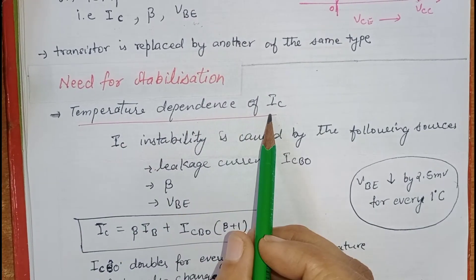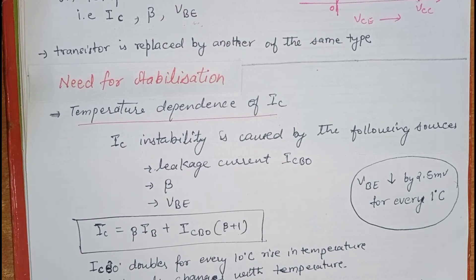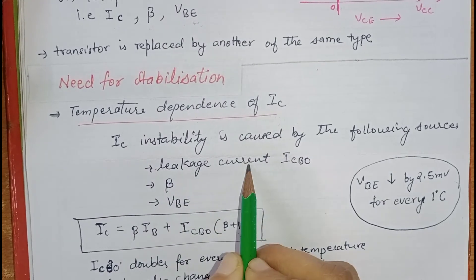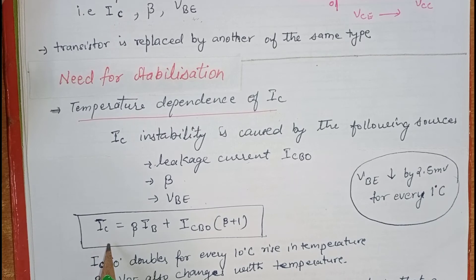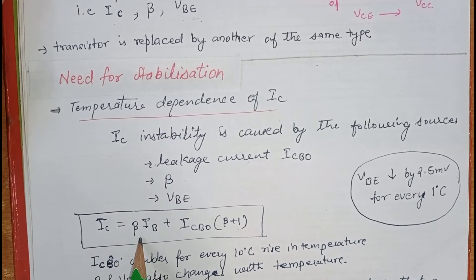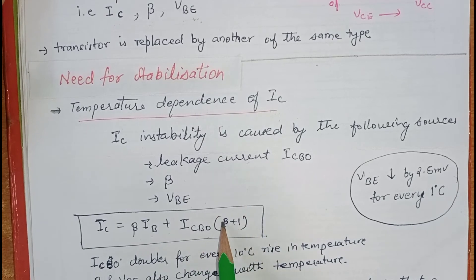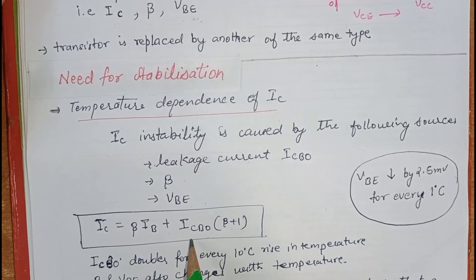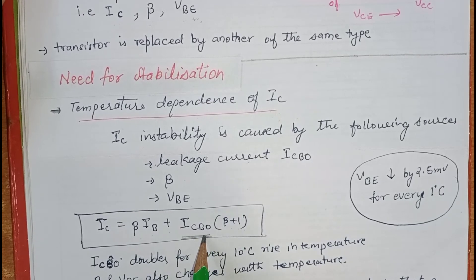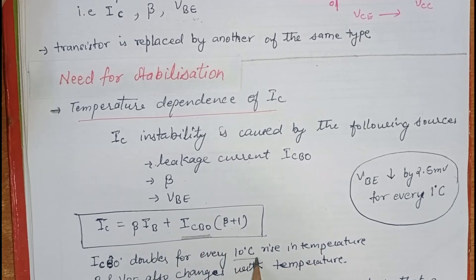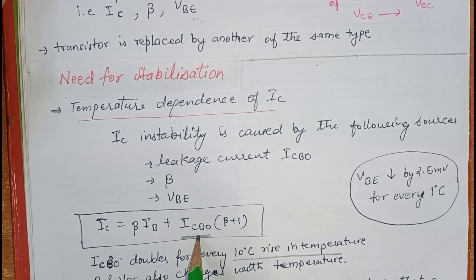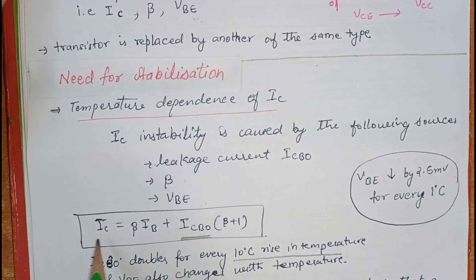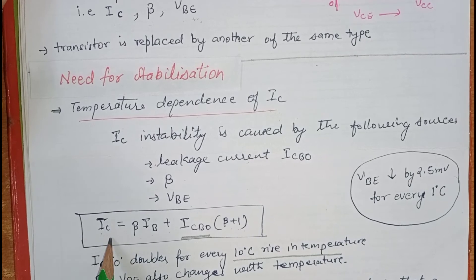The first factor is temperature dependency of IC. The instability is due to the following reasons: leakage current, β, and VBE. In CE configuration, the collector current equation is IC = βIB + ICBO(β + 1). ICBO is called the leakage current, and it is very much dependent on temperature — it doubles for every 10°C rise in temperature. So when this leakage current increases due to temperature, IC also increases directly.